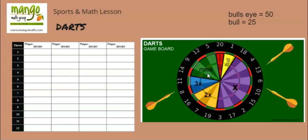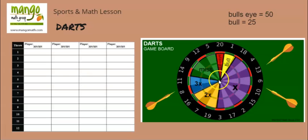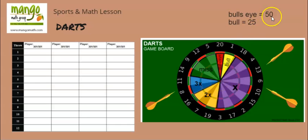A bullseye means you hit the very center of the board. A bull is when you hit the outer ring — very close to the center but not directly in it. The bullseye is worth 50 points and a bull is worth 25 points.